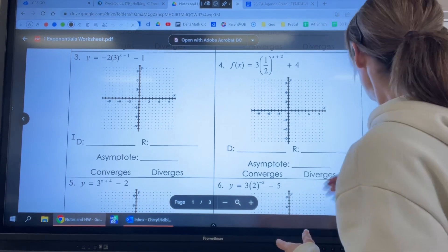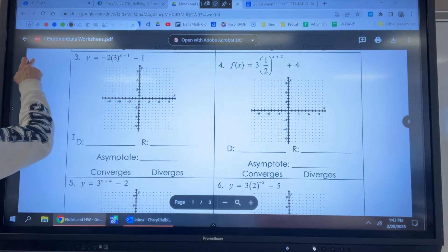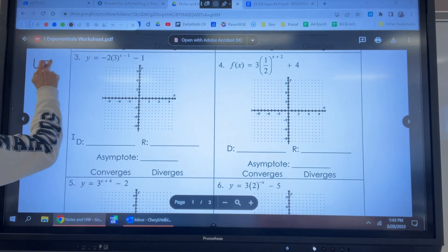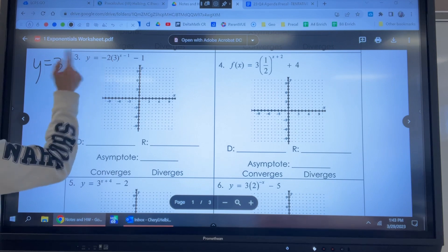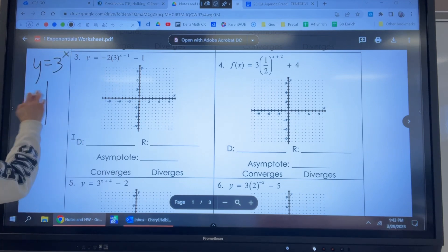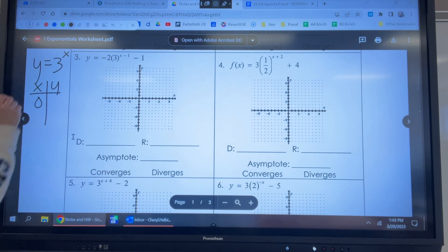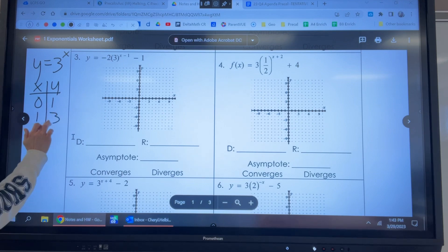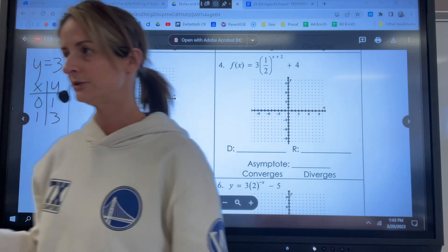So we start from the beginning and we think of if our original function was y equals our base is in this case three to the x power, right? Our original two points would be if I plug in zero, anything to the zero power is one, so zero, one, and then one, our base is three. Any questions on how we got those two points?